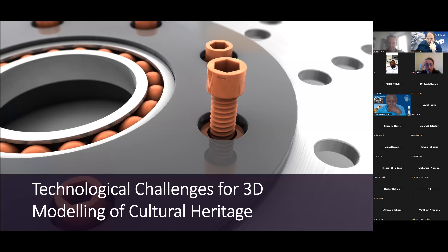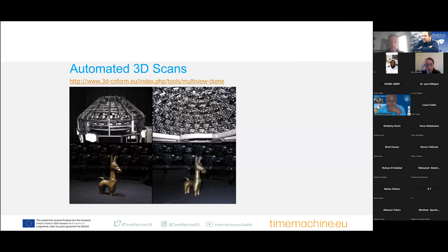After the conceptual challenges, let's dive into technological challenges. One important point is making the 3D modeling process more efficient. At the moment, it's a very labor-intensive, handmade process. There are efforts to automate this — for instance, setups where 800-plus cameras shoot simultaneously and calculate a 3D model from those photos more easily without a long duration.